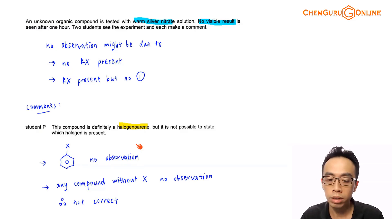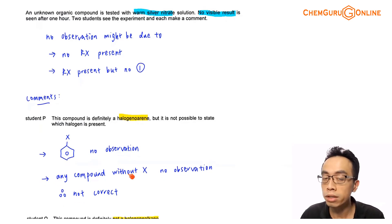By right, any organic compound, as long as there's no halogen involved, will also not give me any observation if you're using silver nitrate tests. I can have an acid functional group, I can have an alcohol functional group, I can have a carbonyl compound, I can have an alkane present. Basically, any functional group that doesn't contain your halogen will give me the same observation. I will not have any visible result when you add silver nitrate and we will not get any precipitate. So this means that actually student P, what he says is not true. It is possible that the compound is a halogenoalkane, but if you say that it is definitely a halogenoalkane and not other possible functional groups, then clearly this is wrong. So this is not correct.